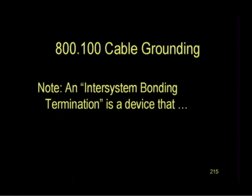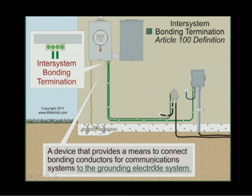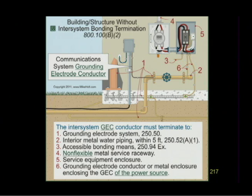Note: a note was added about the inter-system bonding termination referencing the Article 100 definition. An inter-system bonding termination is a device that provides a means to connect bonding conductors for communication systems to the grounding electrode system. So your telephone runs right to it, bringing the telephone to the electrical system, and all these systems are bonded together.